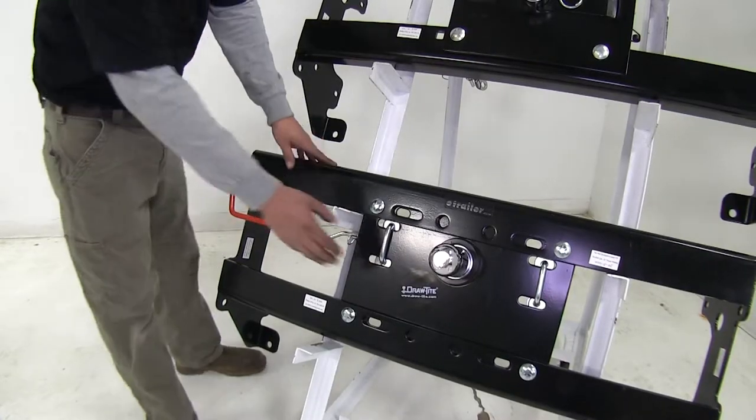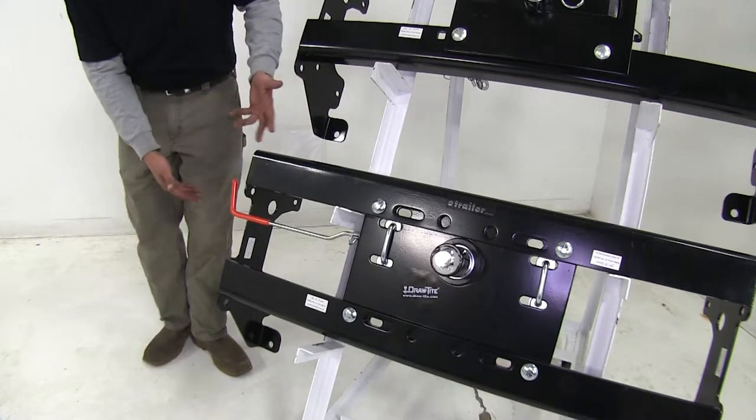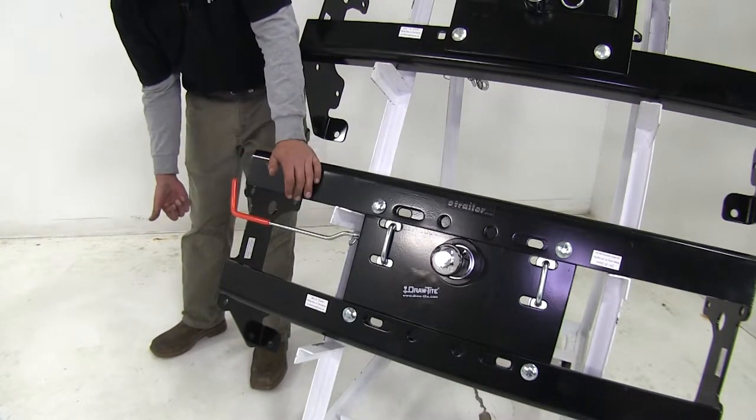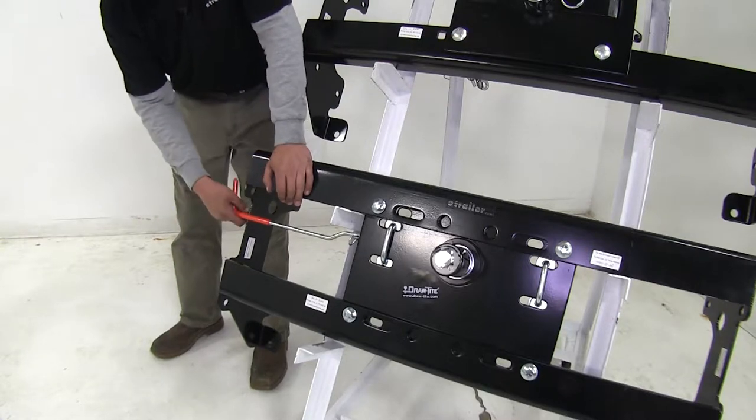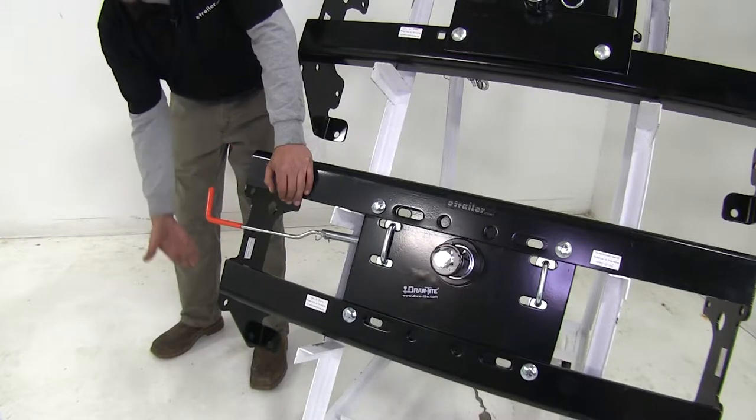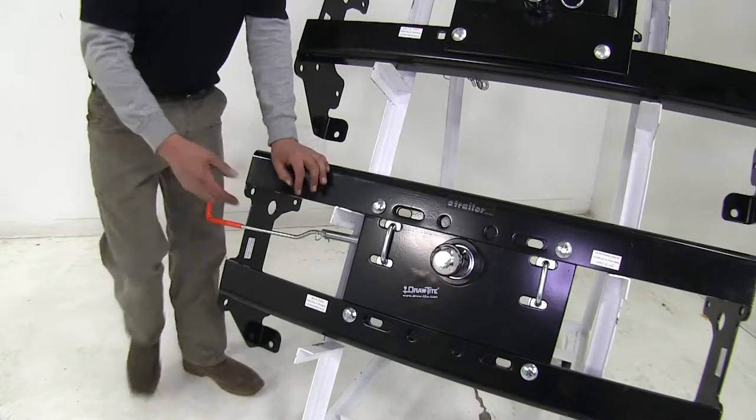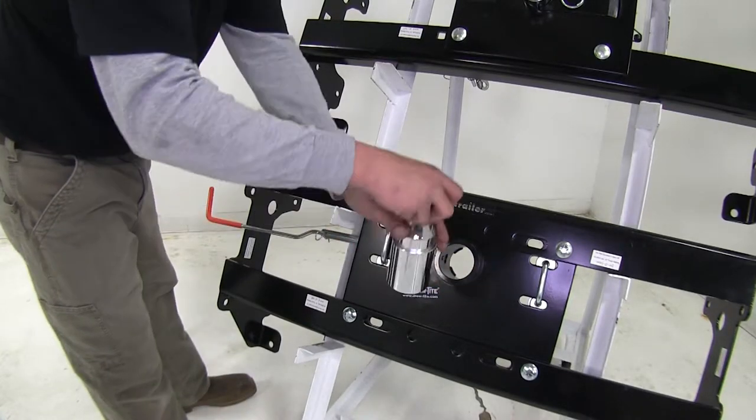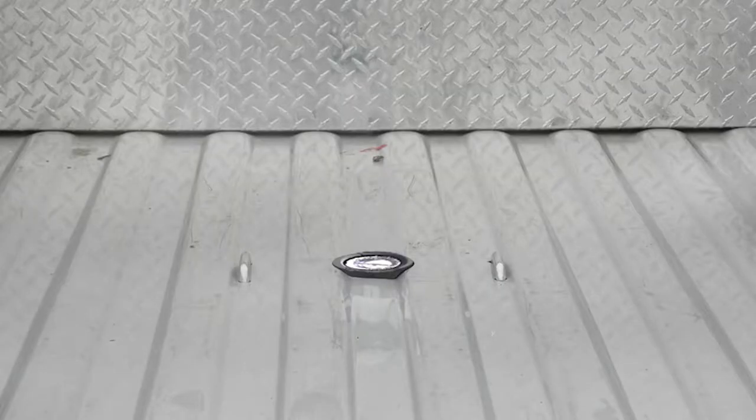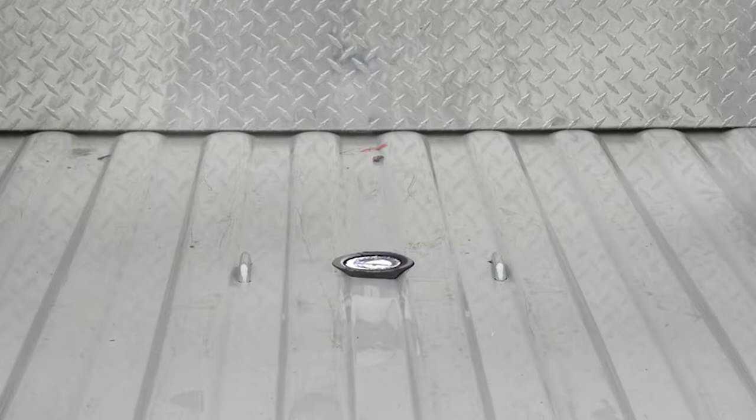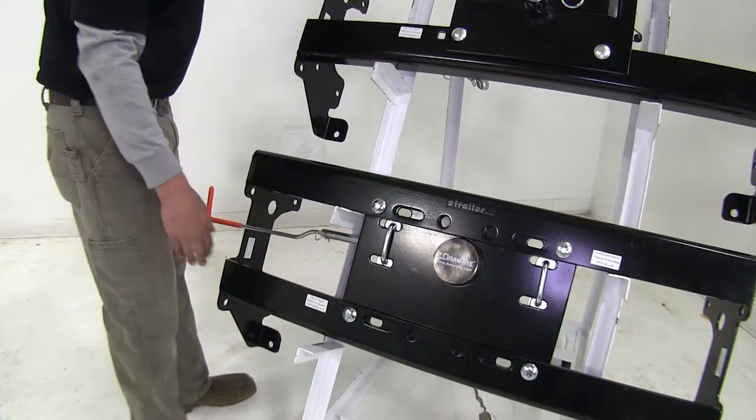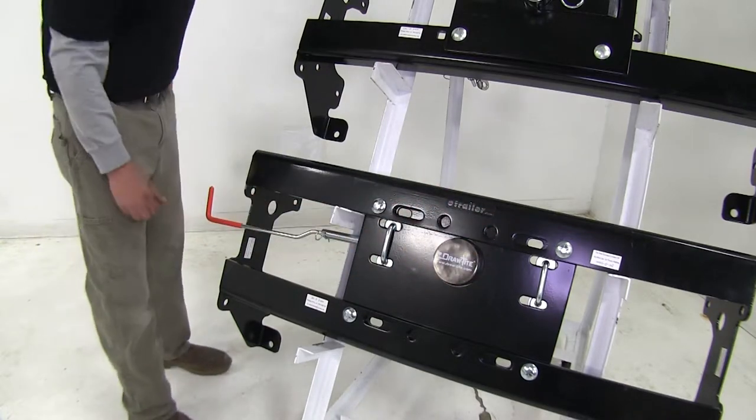Now the Draw Tight Hide-A-Goose here is going to work in a very similar fashion. If we come to our handle over here, again it's going to be on our driver's side wheel well. If we pull the handle out, we can move it either direction, whether it be forward or backwards. We're going to unlock our ball and we can turn it over and put it in there so we can store it. And the Draw Tight actually comes with a nice magnetic cover, so when our ball is stored, we're going to have a nice plug to keep all the debris out.